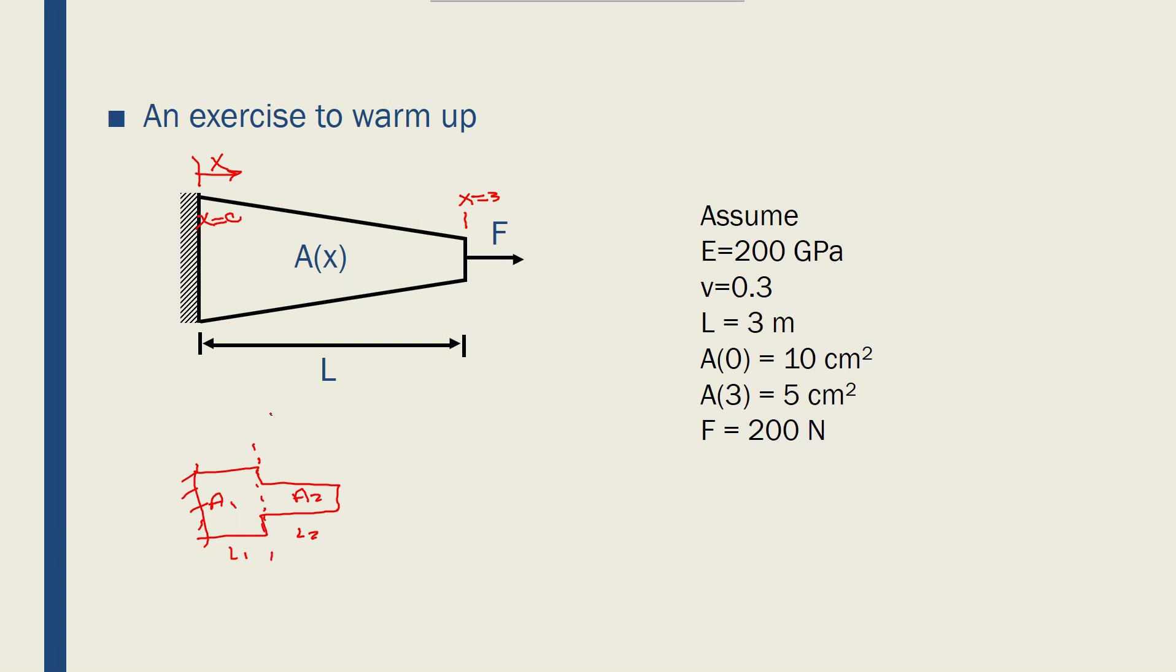But how do I discretize a bar like this whose cross section is changing with location or x? So the first thing I want to do is to find the relationship between A and X. Basically what is A as a function of x. So A of x seems like a linear equation so it would be C1x plus C2.